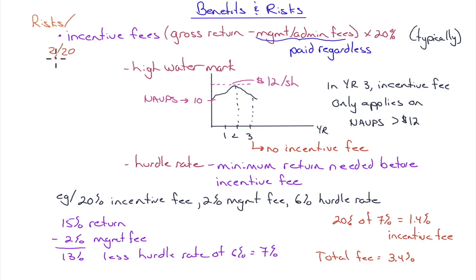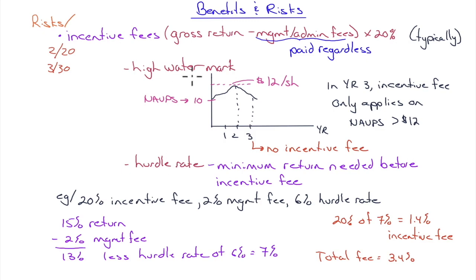For a star performer with great returns and a great track record, fees can go to 'three and thirty' — a 3% management fee and 30% of the upside. Some funds will have something called a high watermark and a hurdle rate before incentive fees kick in.